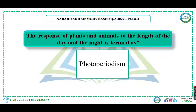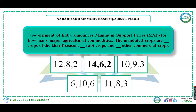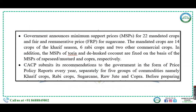The response of plants and animals to the length of day and light is termed as photoperiodism. On this basis, plants are divided into short-day, long-day, and day-neutral plants. The Government of India announces minimum support price for major agriculture commodities — the mandatory crops include Kharif season, Rabi season, and other commercial crops, with options 14, 22, or other combinations. The answer involves two commercial crops.